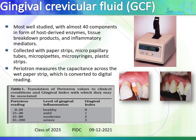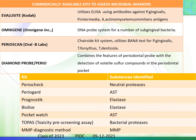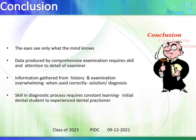GCF is collected using paper strips, micro-pipettes, micro-syringes, or plastic strips. The Periotron device measures capacitance across wet paper strips, converting the reading to a digital value — a reading of 0 to 20 indicates healthy status, while 81 to 200 indicates severe disease status. These are the commercially available kits used as microbial markers.